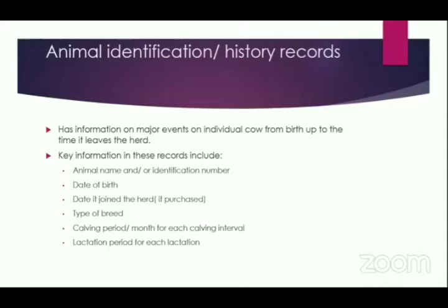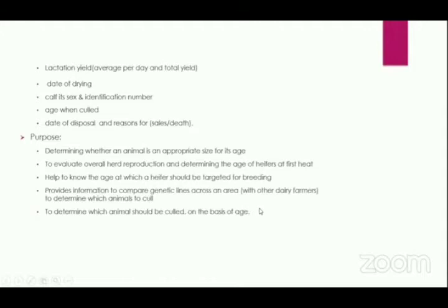Animal identification and history records give us information on major events for an individual animal in our farm, from birth to the time it leaves our herd. The key information includes the animal's name or identification number, the date of birth or when it joined the herd if purchased, the breed, the calving period and month for each calving interval, and the lactation period.